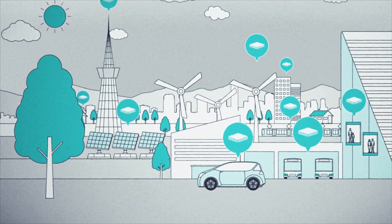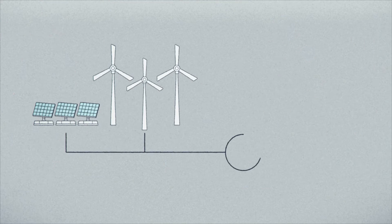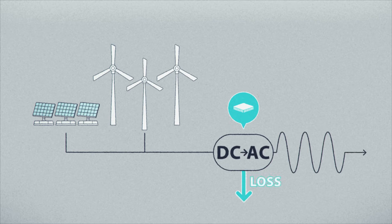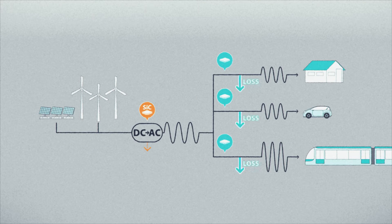For example, they convert the direct current generated by renewable energy sources into an alternating current. The energy loss during this process is dramatically reduced by the use of next generation power devices, enabling the transmission of more energy to wherever it is needed.